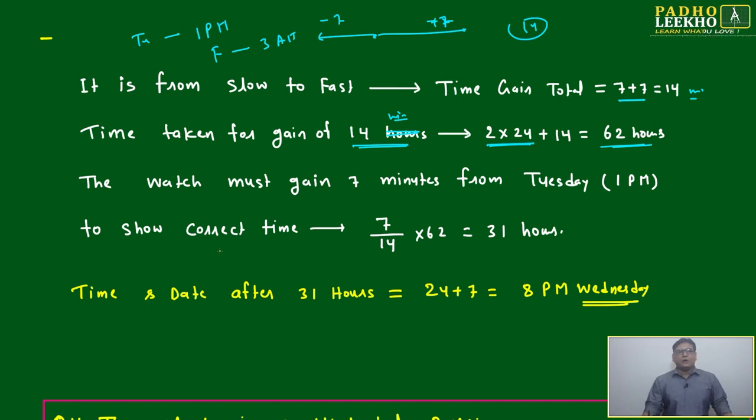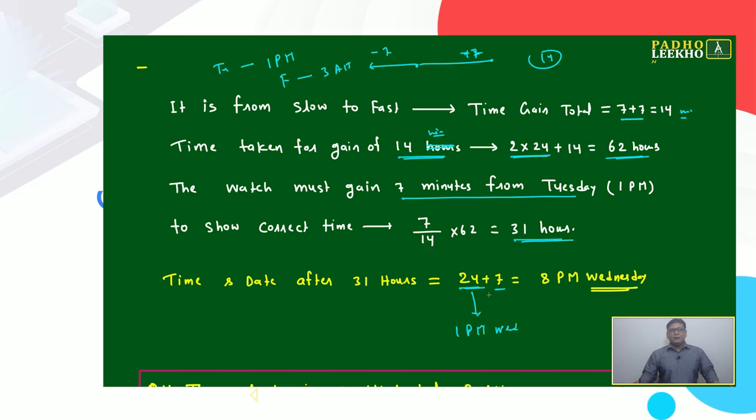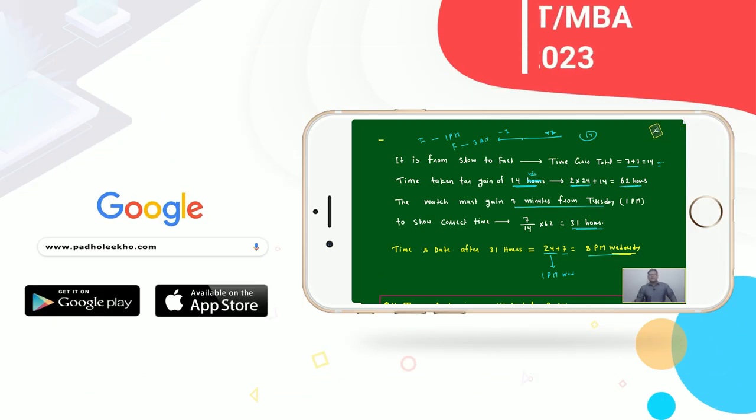The watch must gain 7 minutes from Tuesday to show correct time. After 7/14 × 62 = 31 hours. When will it be 31 hours complete? Time and date after 31 hours will be 24 + 7. One complete day, one complete day means 1 PM from Tuesday to 1 PM on Wednesday, plus 7 hours means 8 PM Wednesday. 8 PM of the Wednesday, this clock will show exact time. All right.